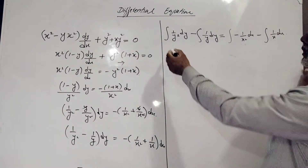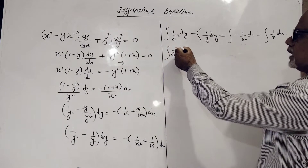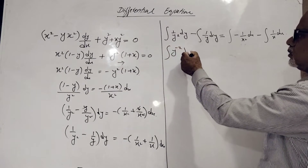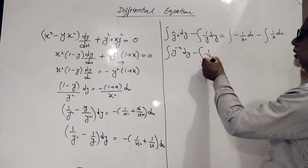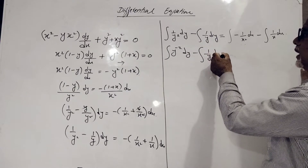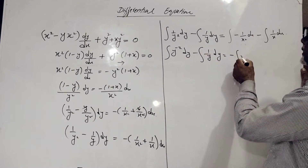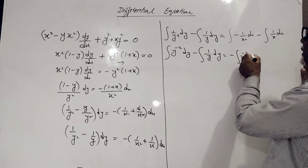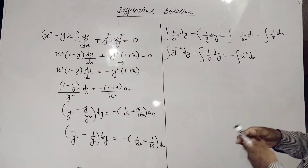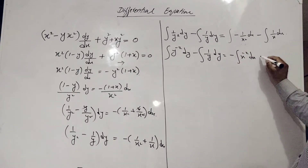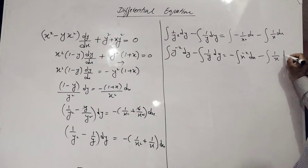Now we rewrite: 1/y² becomes y to the power minus 2, and 1/y remains. On the right side, 1/x² becomes x to the power minus 2, which we shift to the numerator, and minus 1/x.